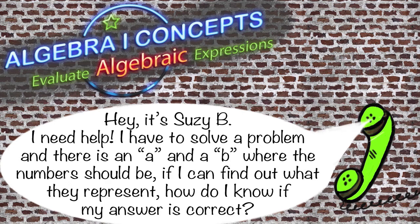Hey, it's Suzy B, and I need help. I have to solve a problem, but I'm missing the numbers, and there's an A and a B where the numbers should be. If I can find out what they represent, how can I solve the problem?